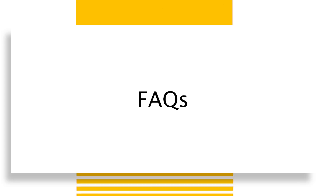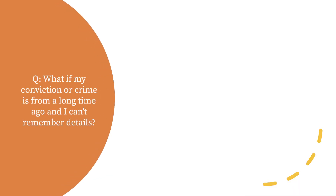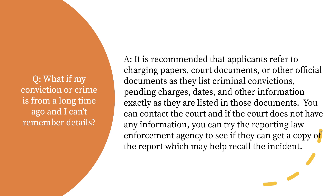Frequently asked questions: What if my conviction or crime is from a long time ago and I can't remember details? It is recommended that applicants refer to charging papers, court documents, or other official documents, as they list criminal convictions, pending charges, dates, and other information exactly as listed in those documents. You can contact the court.